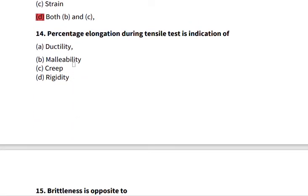Fourteen: percentage elongation during tensile test is indication of, that's A, the ductility. So the percentage elongation during tensile test indicates ductility.